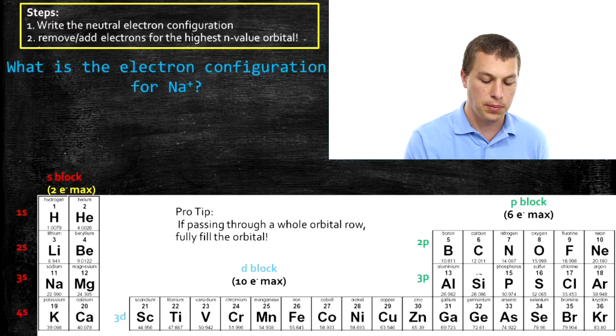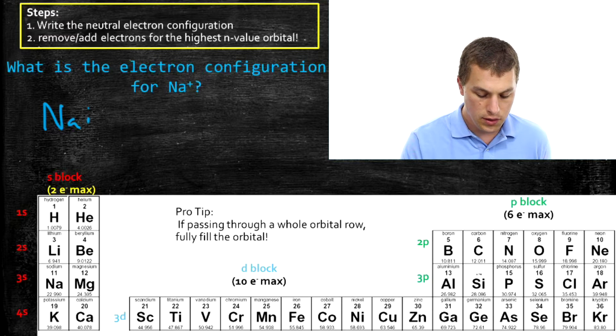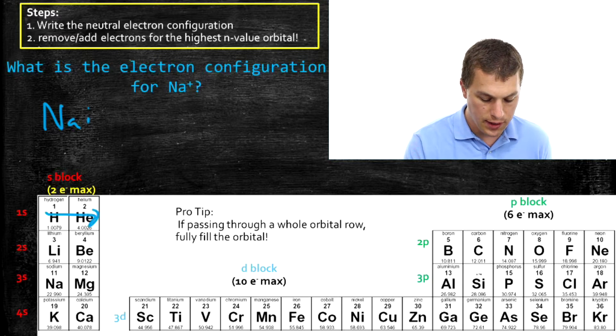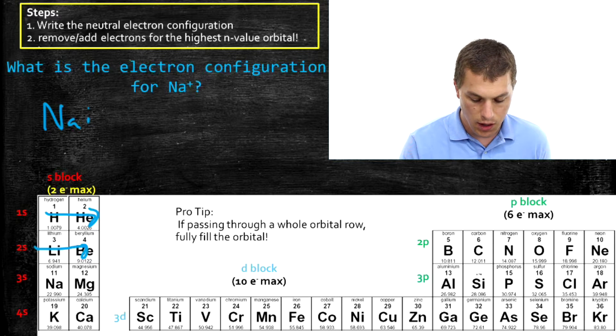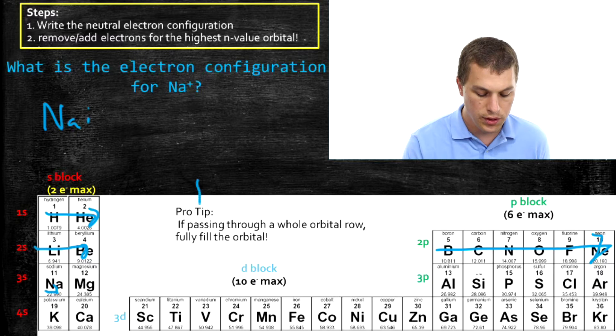So here we have sodium plus that we want to write. So again, the first step is just to write the electron configuration for sodium. And for sodium, we pass through the 1S block, the 2S block, all the 2P block, and then one block into the 3S row.